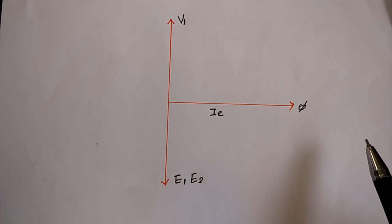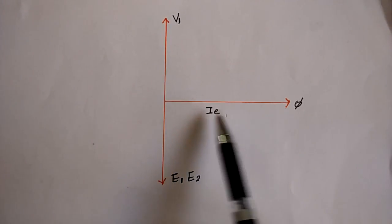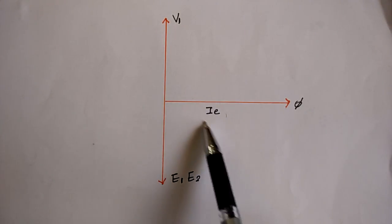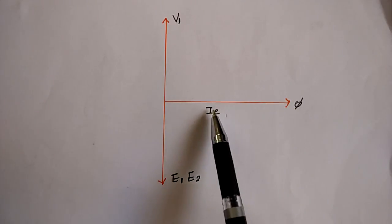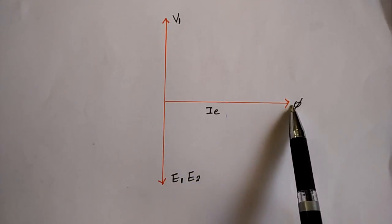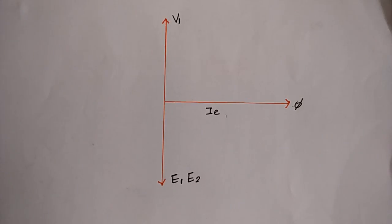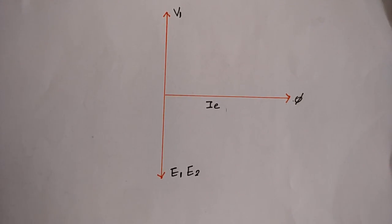And since Ie will be in phase, it's the component responsible for producing the flux, so it will be in phase with the flux phi. So this was about the phasor diagram of an ideal transformer on no load.